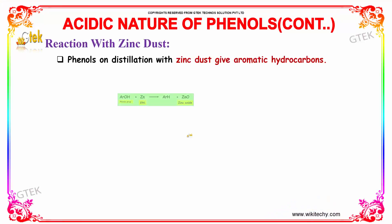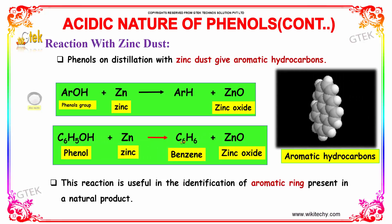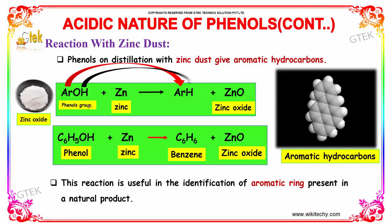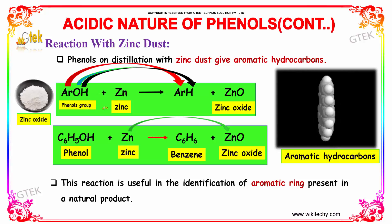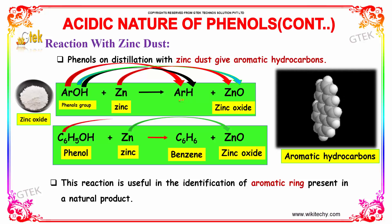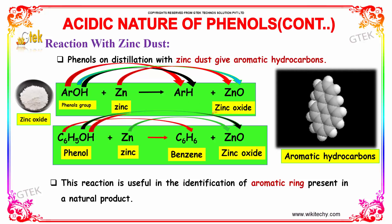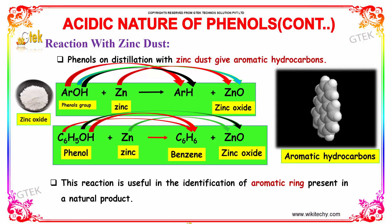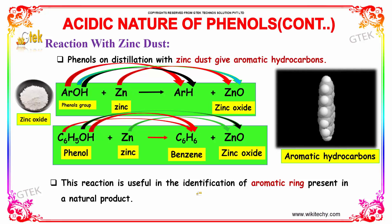Let us now discuss the reaction with zinc dust. Phenols on distillation with zinc dust give aromatic hydrocarbons. When phenol reacts with zinc, it gives benzene and zinc oxide (ZnO). This reaction is useful in the identification of an aromatic ring present in a natural product.